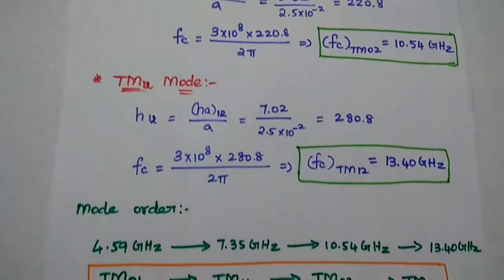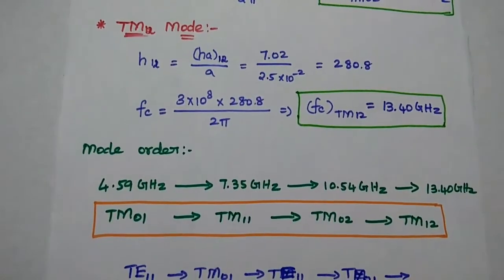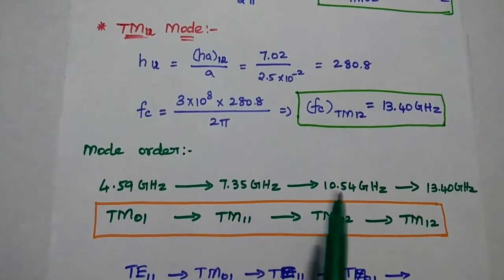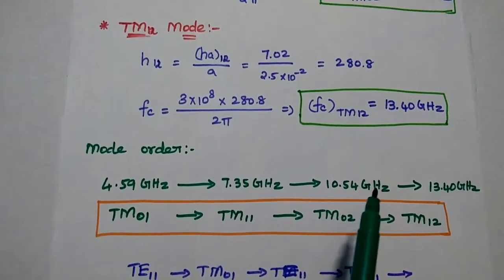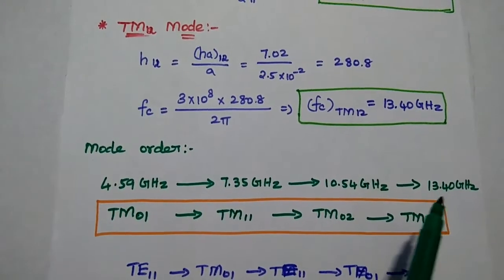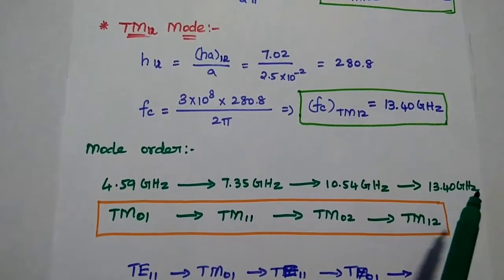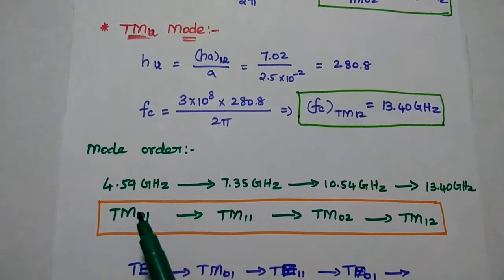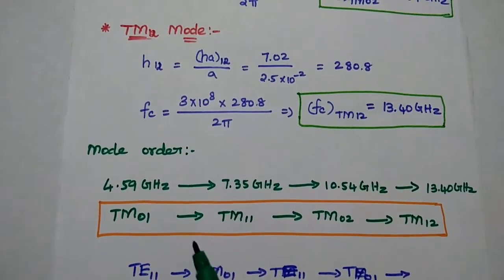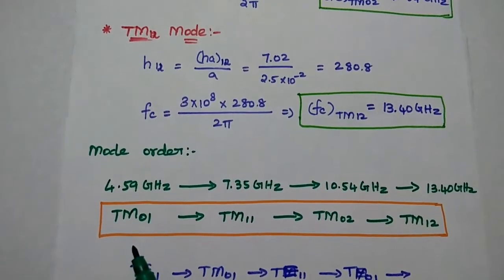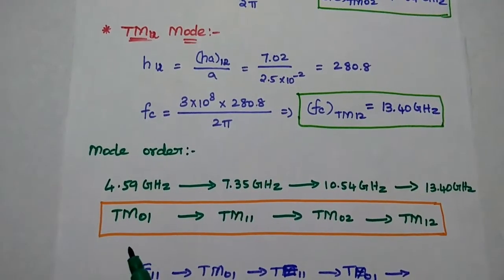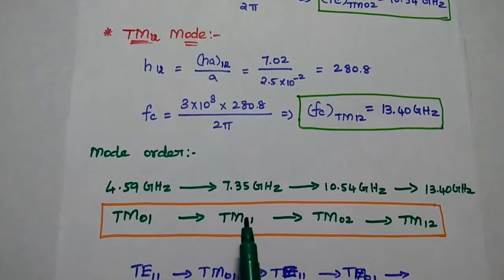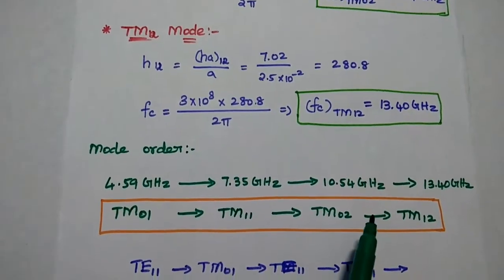From this calculation, the TM mode order is: 4.59 GHz, 7.35 GHz, 10.54 GHz, and 13.40 GHz. The lowest cutoff frequency is TM01, which is the dominant mode for TM waves. The order is TM01, then TM11, TM02, TM12.